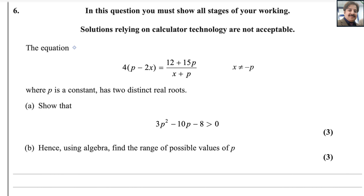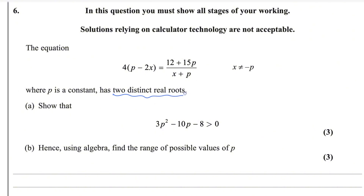Let me read the statement of this question. In this question, you must show all stages of your working. Solutions relying on calculated technology are not acceptable. The equation 4 into (p minus 2x) equals 12 plus 15p over (x plus p), where x is not equal to negative p, where p is a constant, has two distinct real roots.